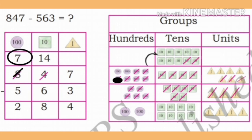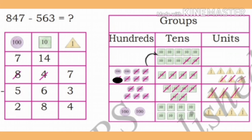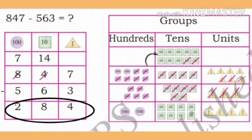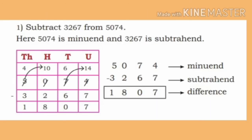Now 7 is left in the hundreds place — 700 remaining in the hundreds group. Subtract 5 from 7, we get 2. Write remaining 2 in the hundreds place. Therefore, when 563 is subtracted from 847, 284 remains.